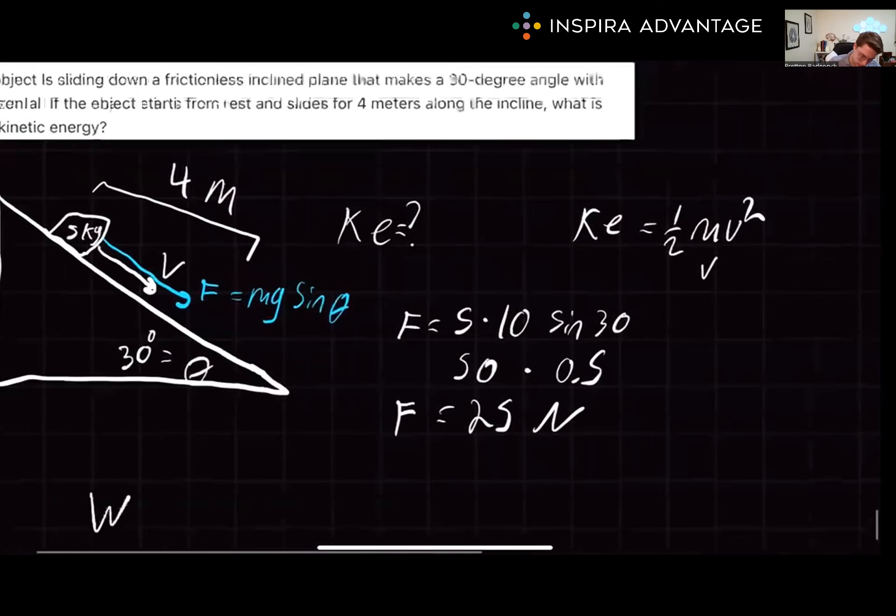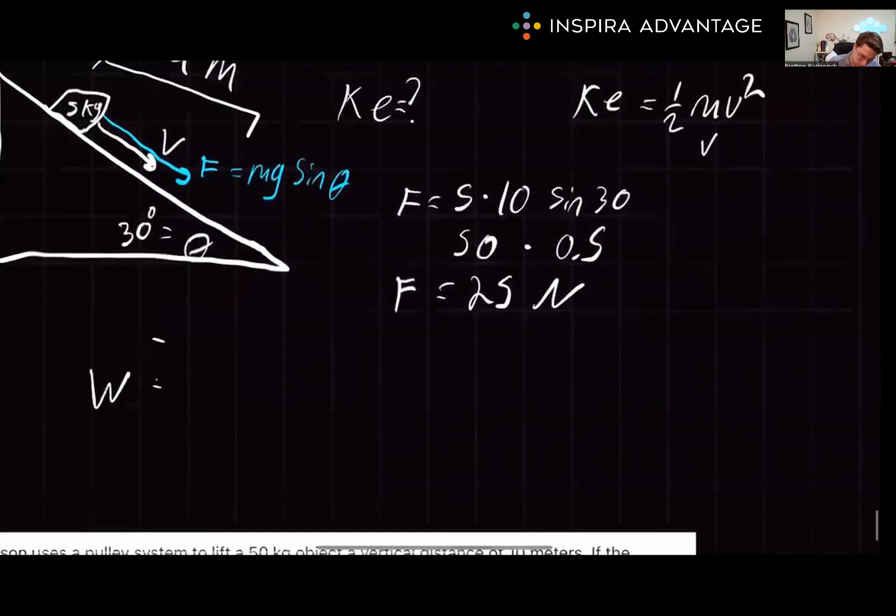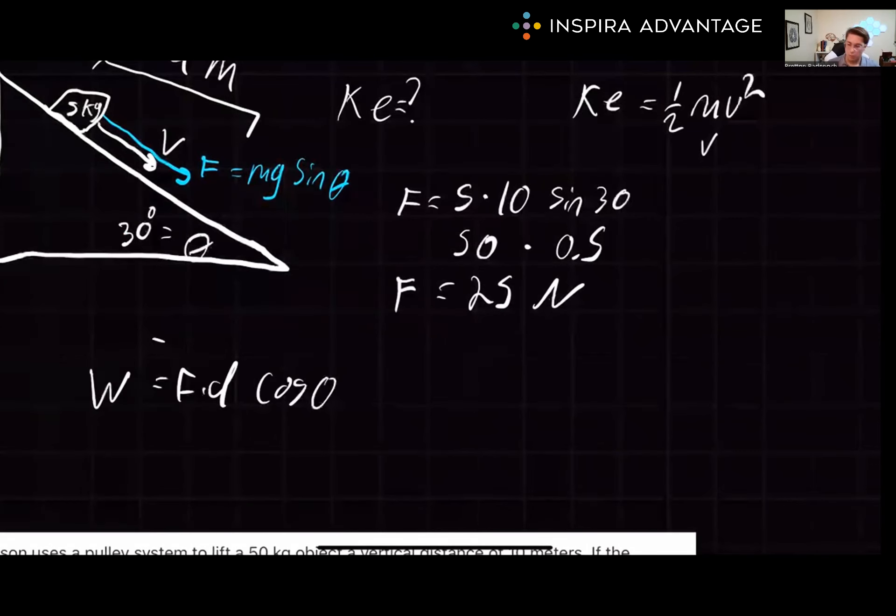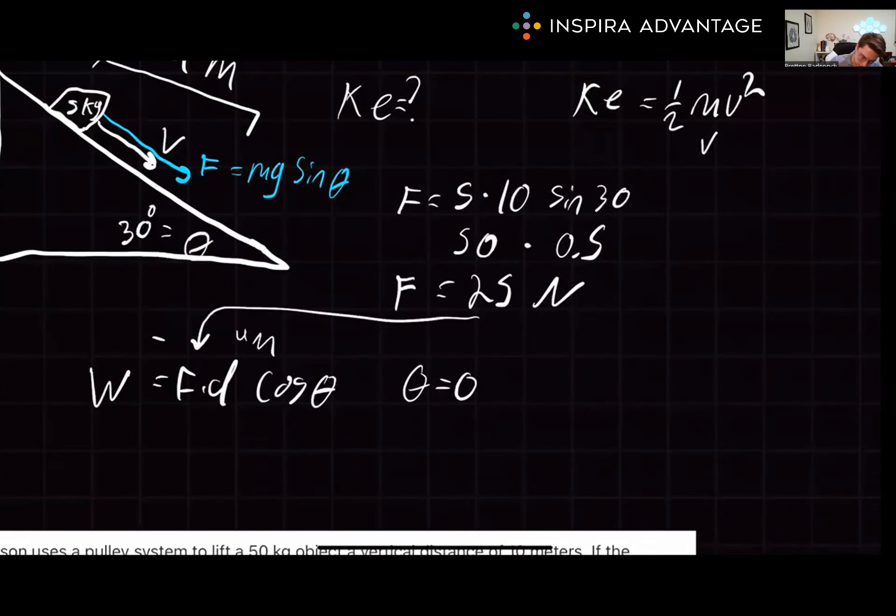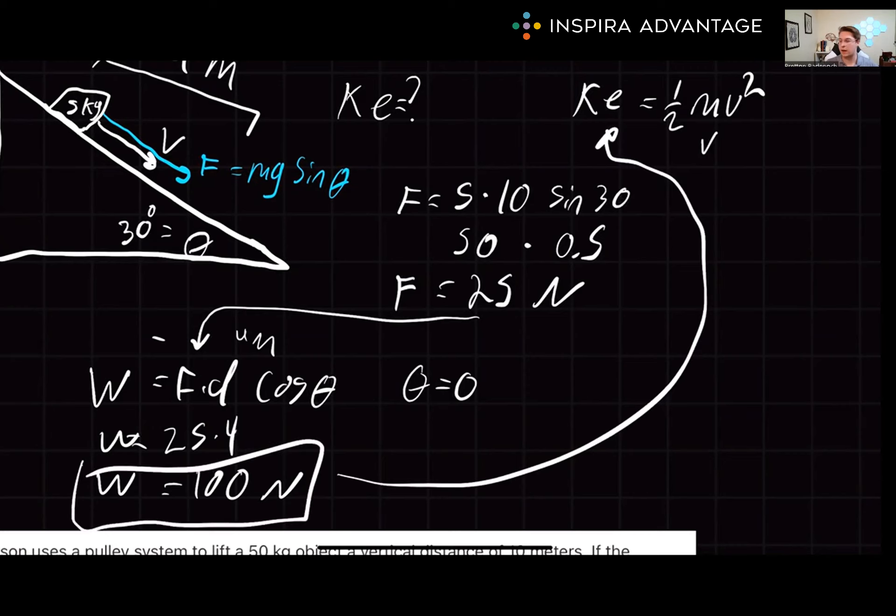Now we need to take this force and convert it into work. Work equals force times distance cosine theta. Again, the force and distance are moving in the same plane, so theta equals 0. We can plug in our force and the distance of four meters. So 25 times four equals 100 newtons for our total work. Since there's no friction and the object starts from rest, the work done by gravity equals the final kinetic energy of the object. So we didn't even need to use velocity. Isn't that nice?